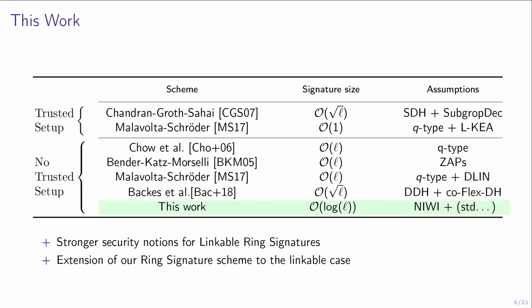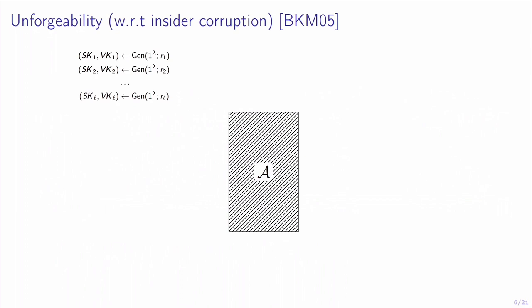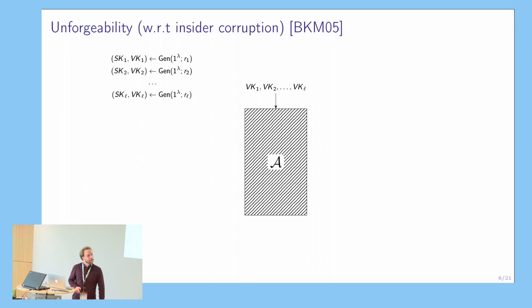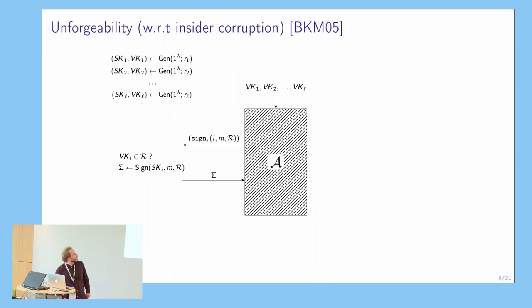In the first part of the talk I will describe our plain ring signature scheme, and for this I first want to refresh the security notions for ring signatures. Unforgeability intuitively means that no signer can create a valid signature without having at least one of the signing keys that belongs to the ring. We model this as a game where the adversary gets a bunch of honestly generated signing keys and can make signing queries for any of these keys.